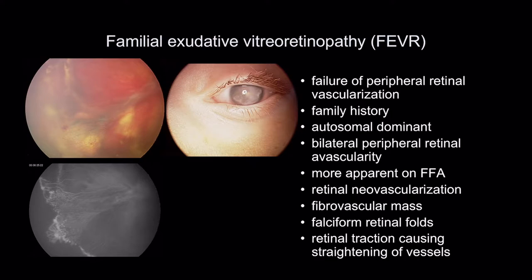FEVR is where there's been a failure of peripheral retinal vascularization. There's often a family history, as it's autosomal dominant inheritance. You get bilateral peripheral retinal avascularity, though it can be asymmetric — sometimes the milder eye only shows the avascular change on fluorescein angiography. You can get neovascularization, a fibrovascular mass, falciform retinal folds, and retinal traction causing straightening of the blood vessels.